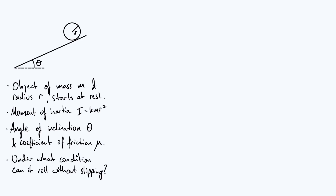Mu is going to be a very important parameter here, because even without working through any details, we have this intuitive sense that in order for an object to roll without slipping there has to be enough friction. This problem essentially comes down to quantifying how big the coefficient of friction has to be to allow rolling without slipping. We're going to approach this by considering the forces acting on our rolling object: the weight mg acting straight down, friction f pointing up the plane, and the normal contact force n perpendicular to the plane.